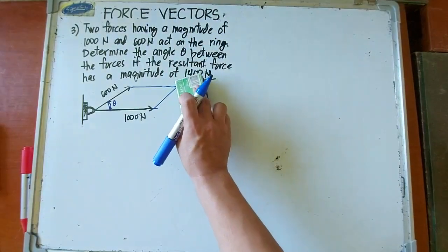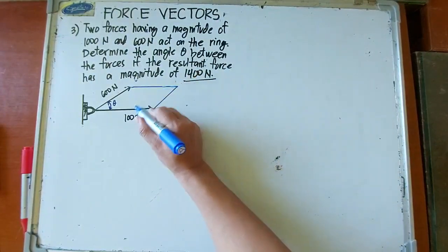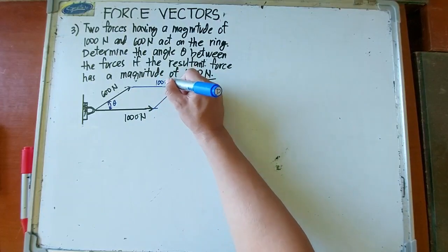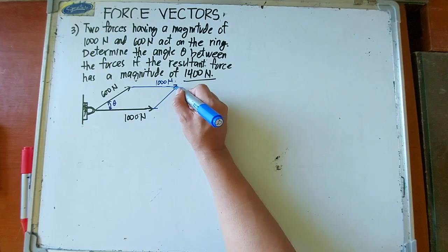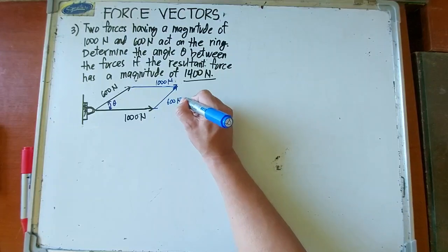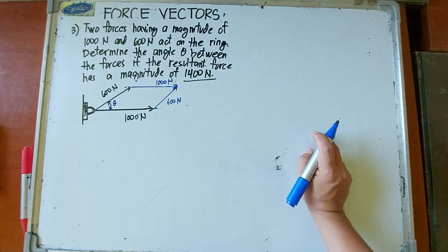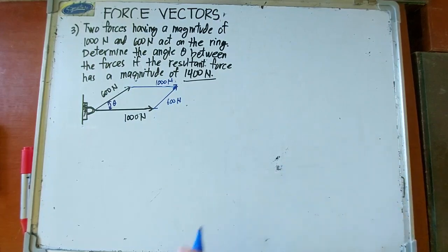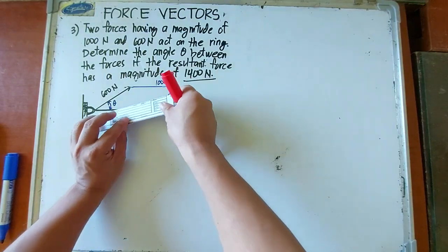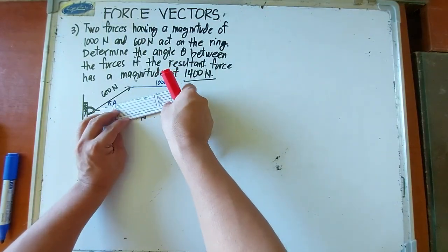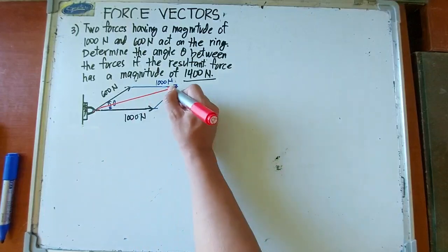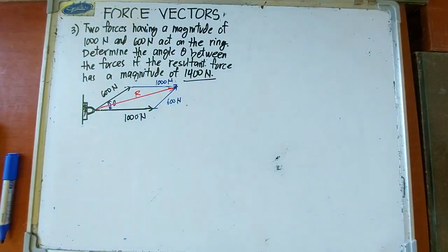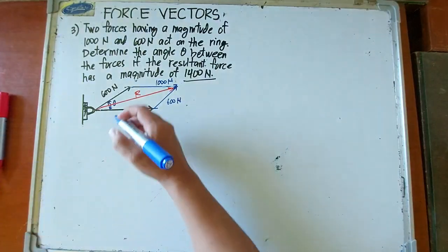So 1,000 newtons, since they're parallel, same direction, same length. This is also 600 newtons. Parallel, so same length, same direction. They are practically the same. So the resultant is the diagonal. Let me use the ruler as a straight edge. This is the resultant force which is equal to 1,400 newtons.